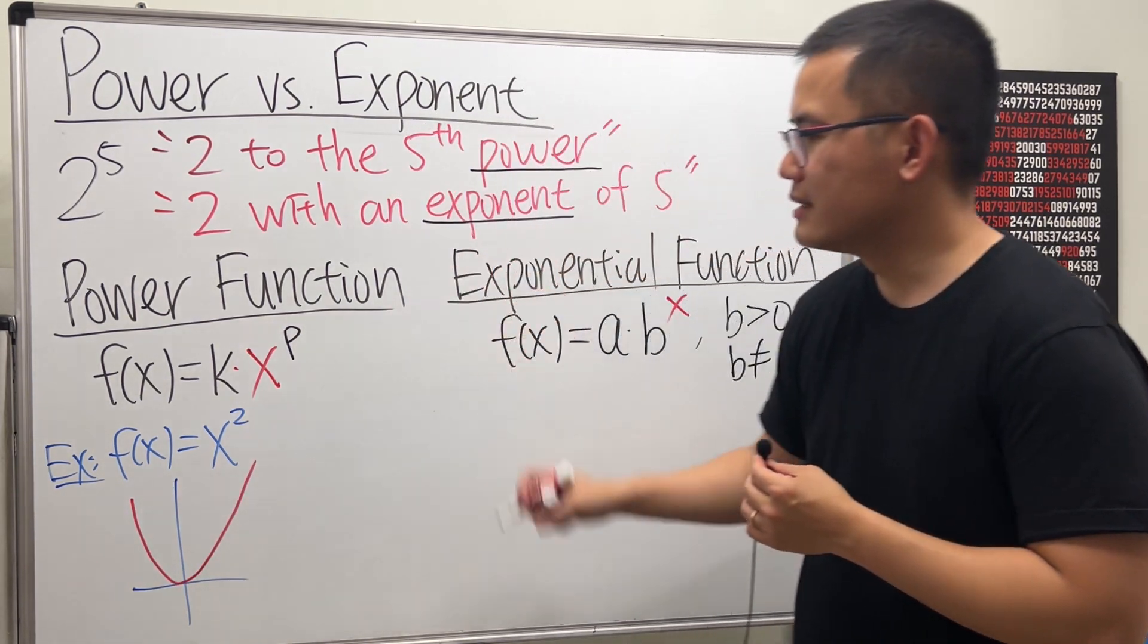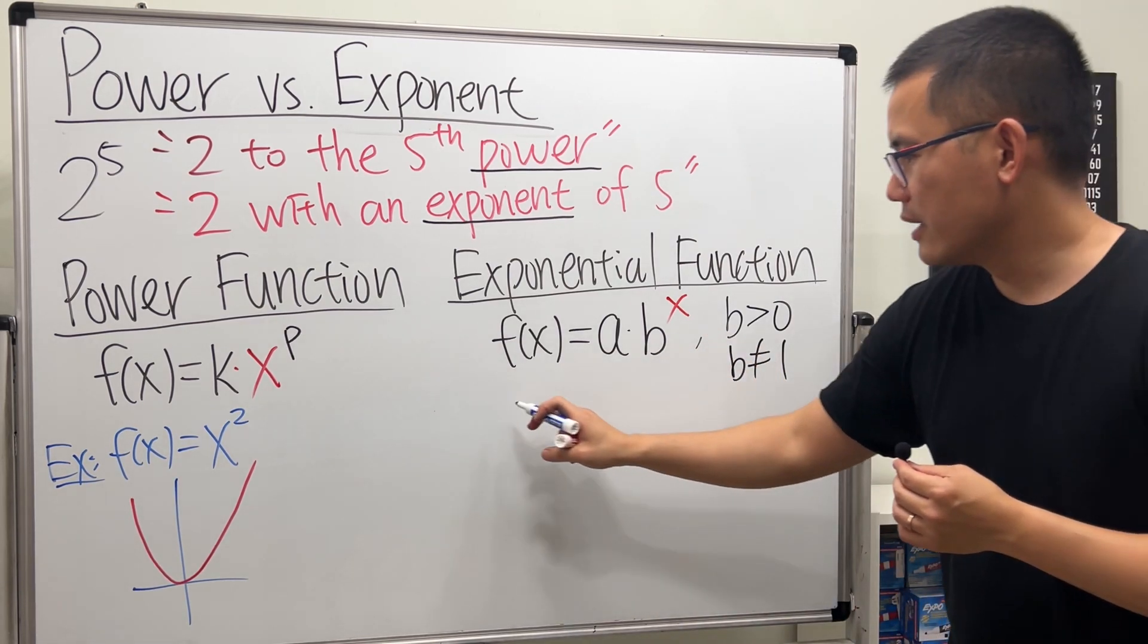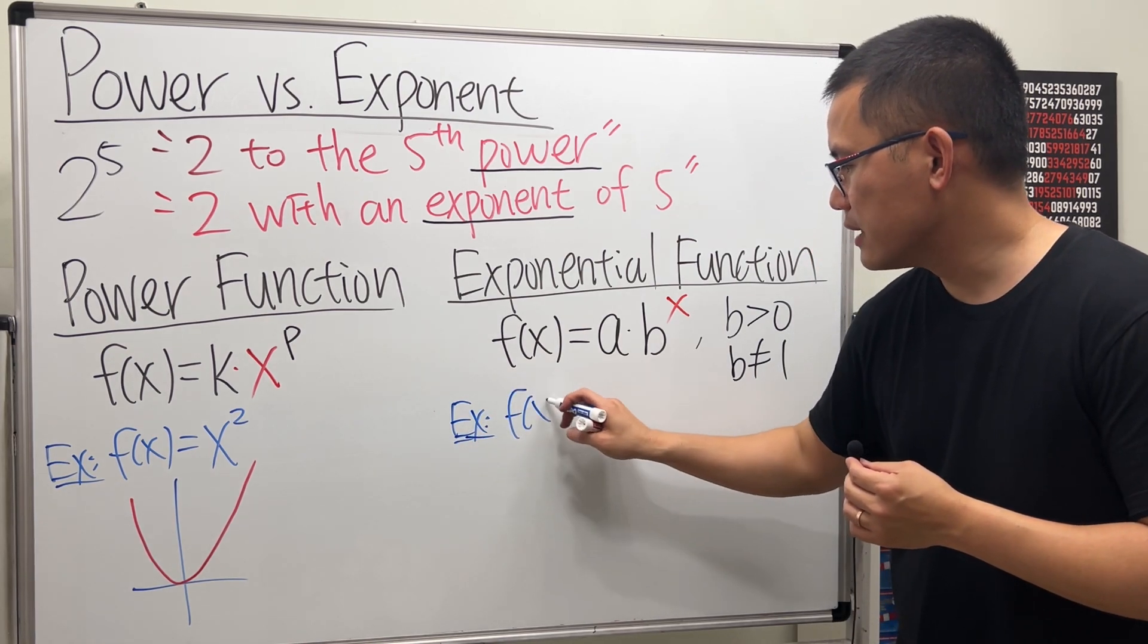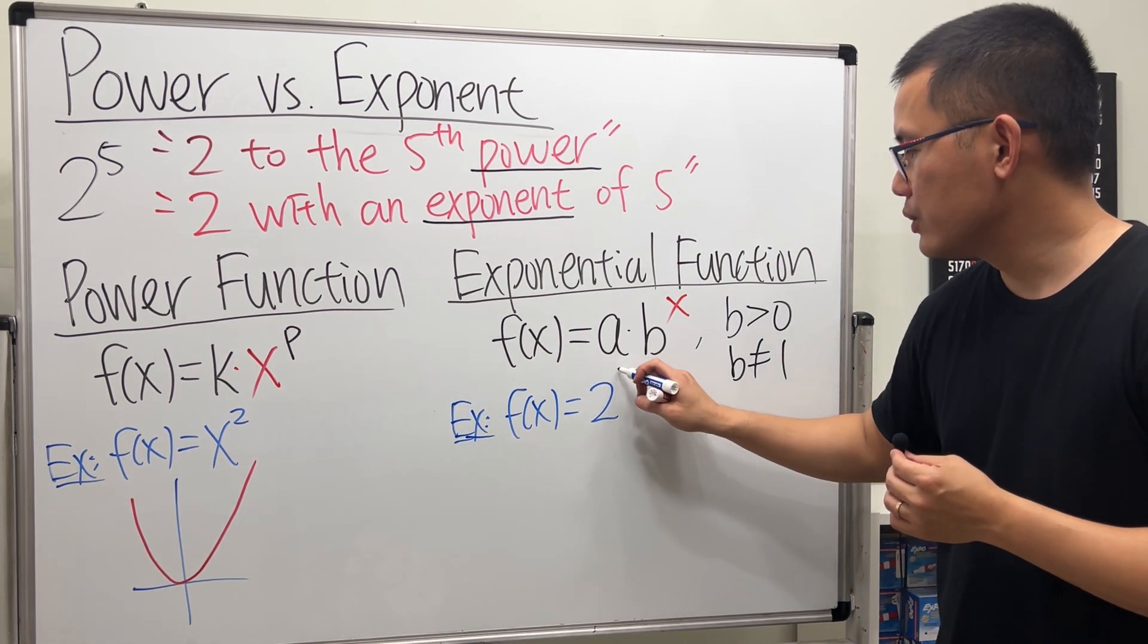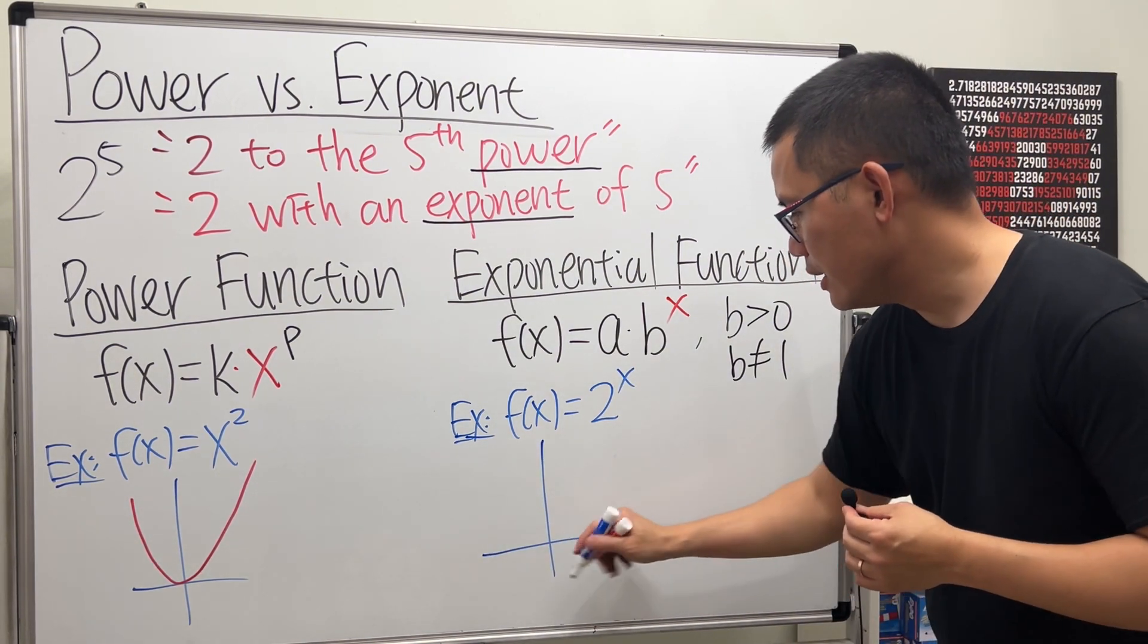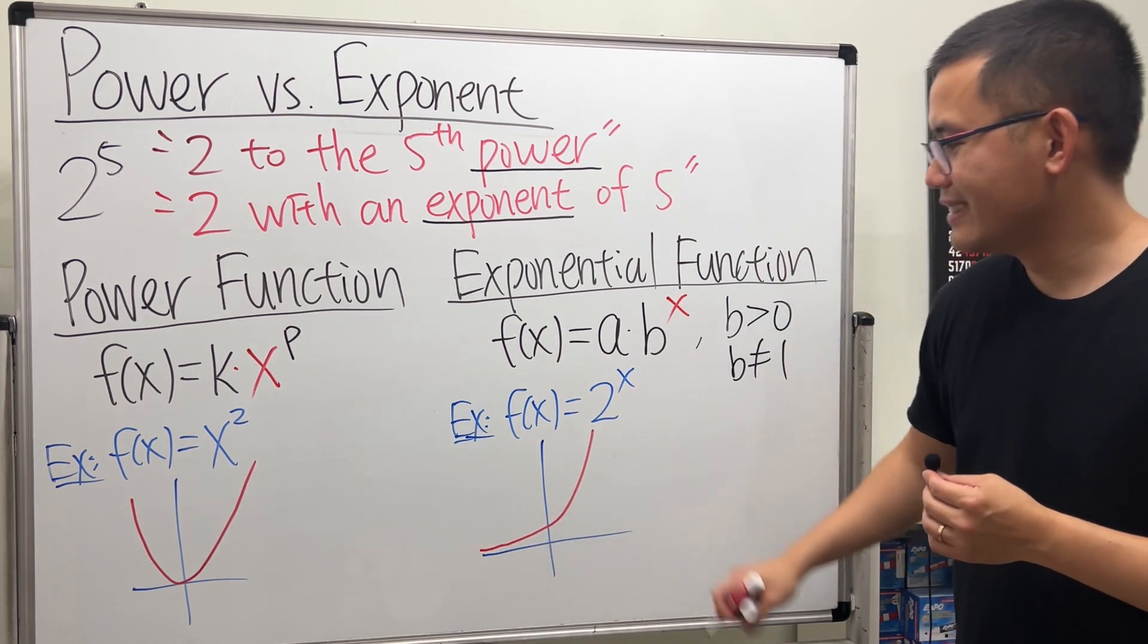Like this. But now, if we switch the 2 and x, we get an exponential function. f of x equals 2 to the x. Then, in this case, the graph for it looks like this. Like that.